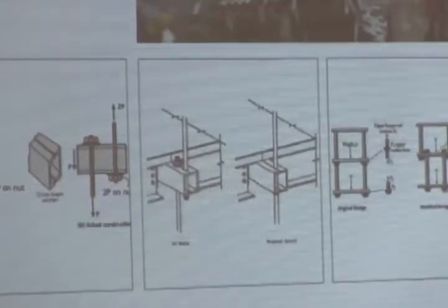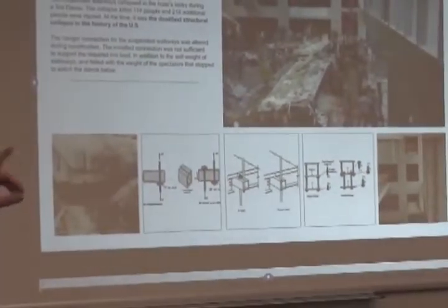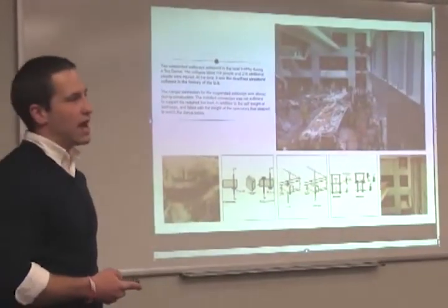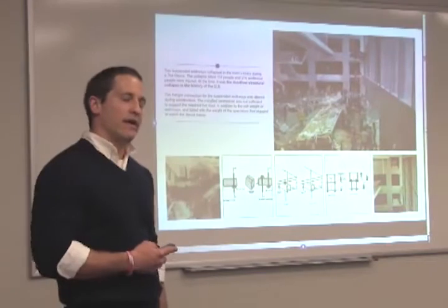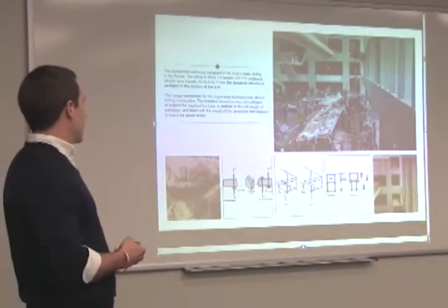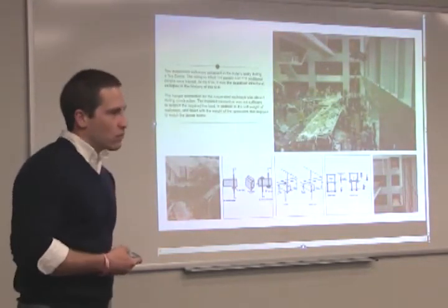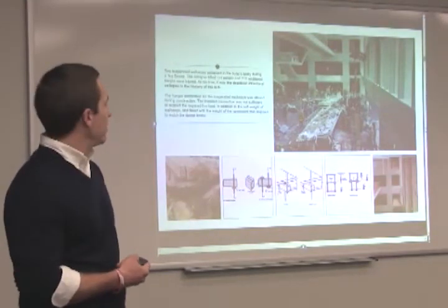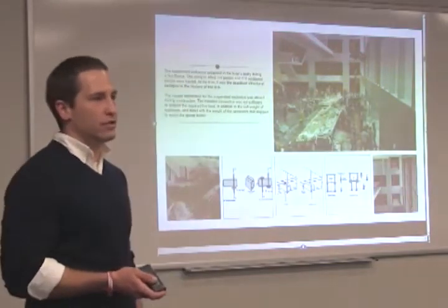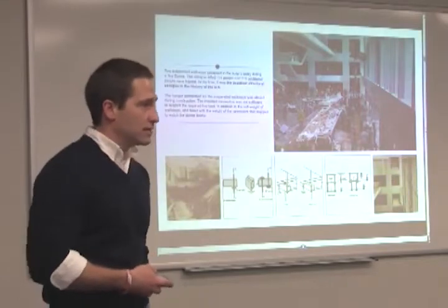Going back afterward and running the numbers, the capacity of the system was just sufficient for the self-weight — just the load of the actual walkway system itself. As people started to congregate and watch the tea party, that second floor slab came down and landed on top of a bunch of the crowd watching the tea dance in the lobby. 114 people were killed and 216 additional people were injured. At that point in time, it was the worst structural collapse in the history of the United States.